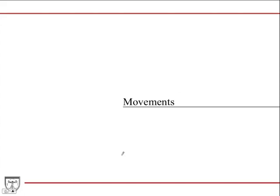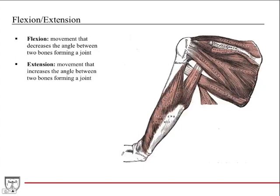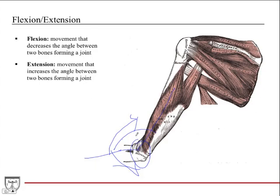Now we'll go through terms of movement of the human body that you'll hear repeatedly in subsequent chapters. Flexion and extension — if your forearm is out and your proximal arm is extended, there is an angle between the two. Flexion is any movement that decreases that angle, such as flexing your elbow and pulling your forearm closer. Extension increases that angle, bringing it out. The triceps on the posterior part of your arm contracts and pulls the forearm out to extend it.